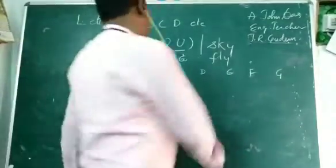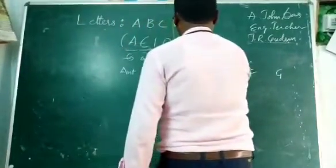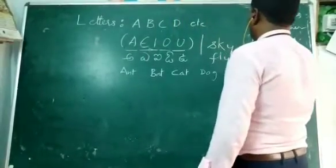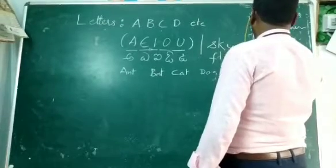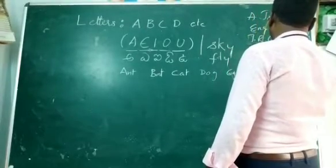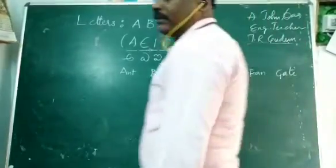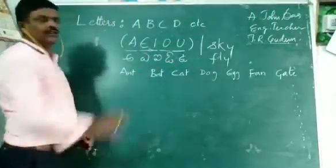C, A, T. Cat. D, O, G. Dog. E, G, G. Egg. F, A, L. Fan. Gate. So, by that, small words are found.